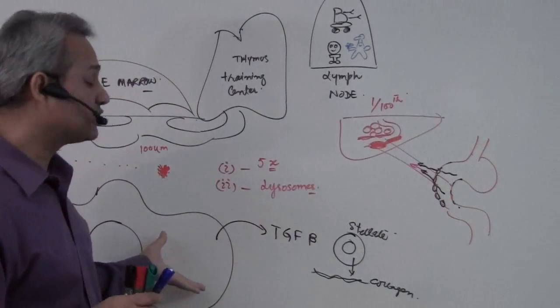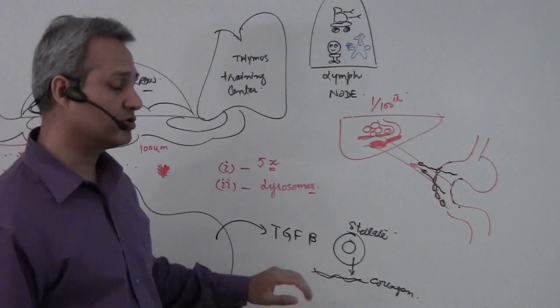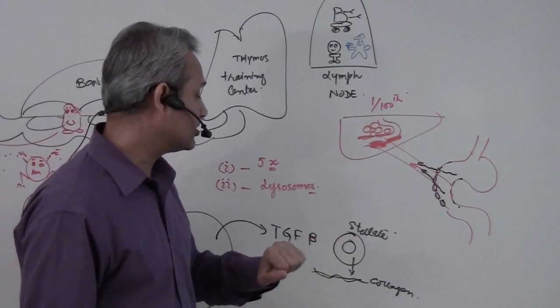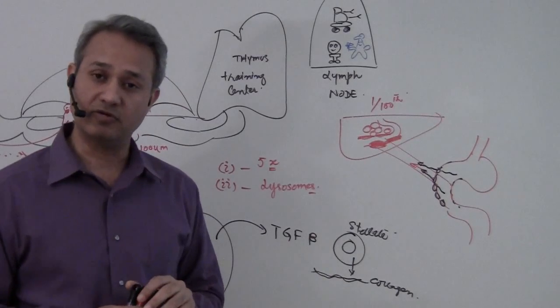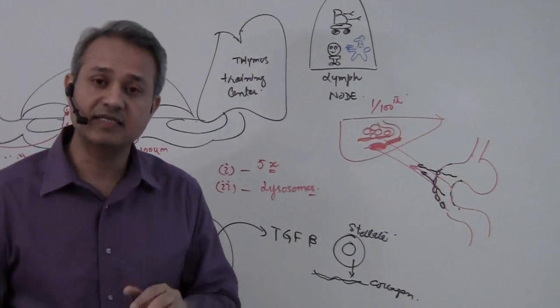That would cause increased triggering of the macrophages. Macrophages as part of the triggering would release tumor growth factor beta, which is going to act on stellate cells and cause repair in the local area. Unnecessary repair, unnecessary cementing.